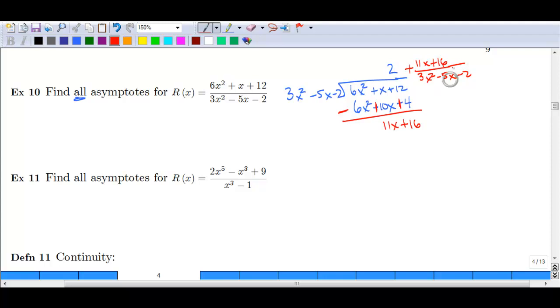So we end up with that remainder of 11x plus 16 over 3x squared minus 5x minus 2. And again, the remainder isn't as important as this F(x) equals 2 here. So we have a horizontal asymptote because we just ended up with a number, and it is going to occur at F(x) equals 2, or if you prefer y equals 2. So we're going to have that horizontal line, y equals 2.